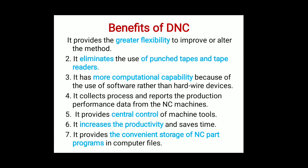Third, it has more computational capability because of the use of software rather than hardware devices. In NC systems it was hardware-based, but in CNC/DNC it is totally software-based, giving more computational capability for operations and machining. Fourth, it collects, processes, and reports production performance data from the NC machines. From the NC machines we get reports regarding machining or programming, and we collect all those reports and production data and store them in one place. Fifth, it provides central control of all machine tools from the central computer.